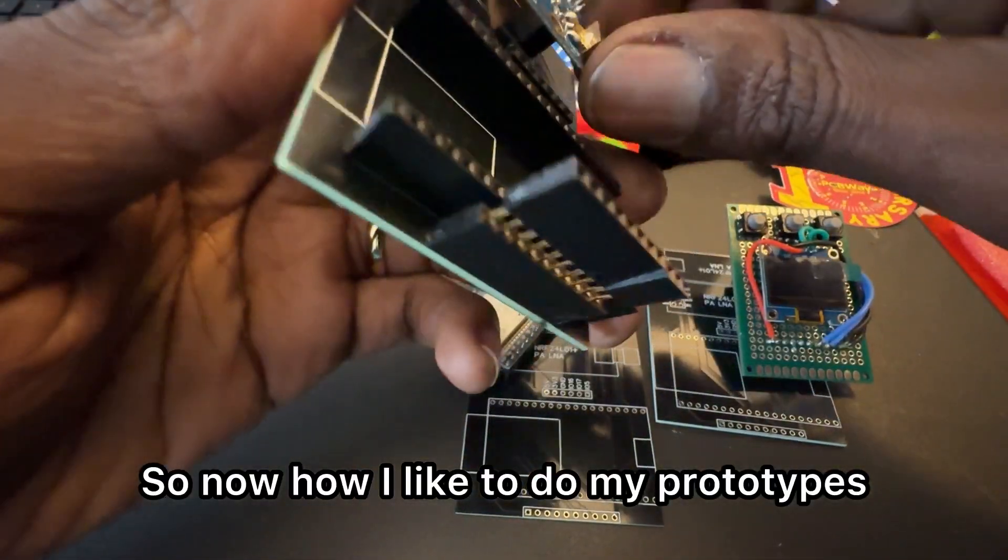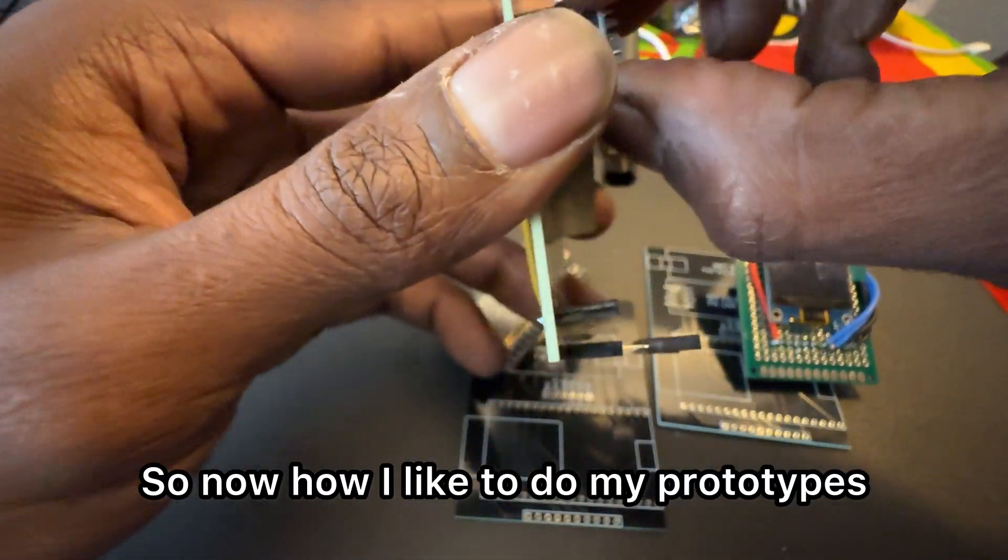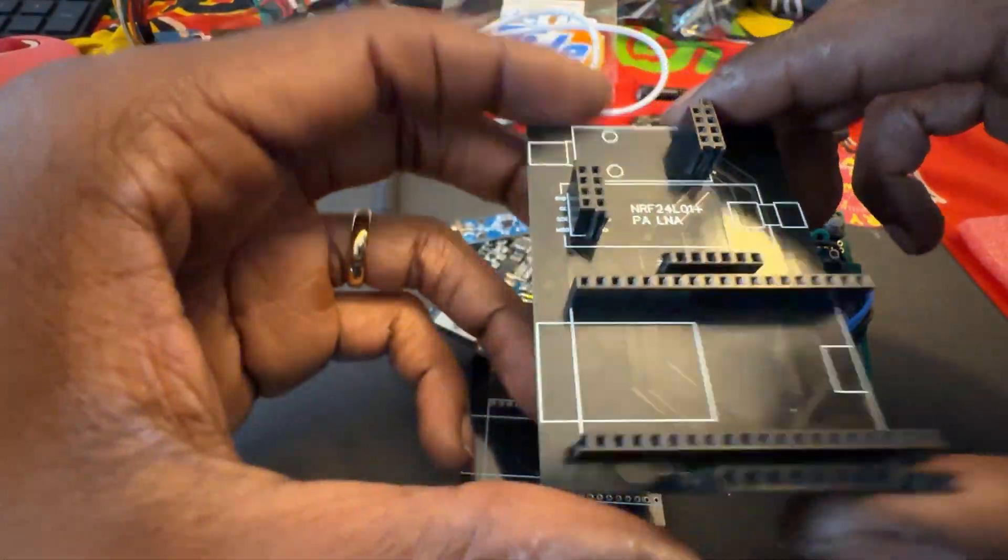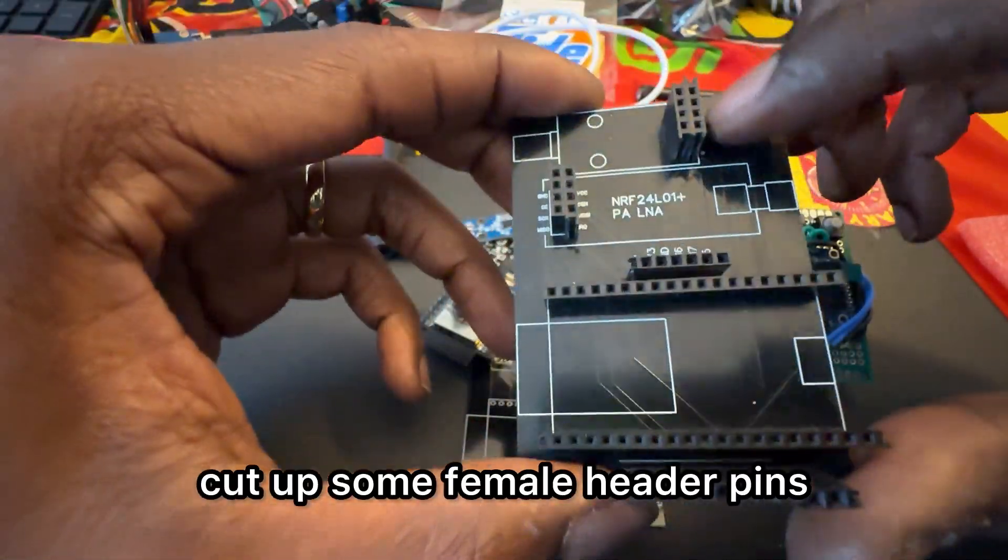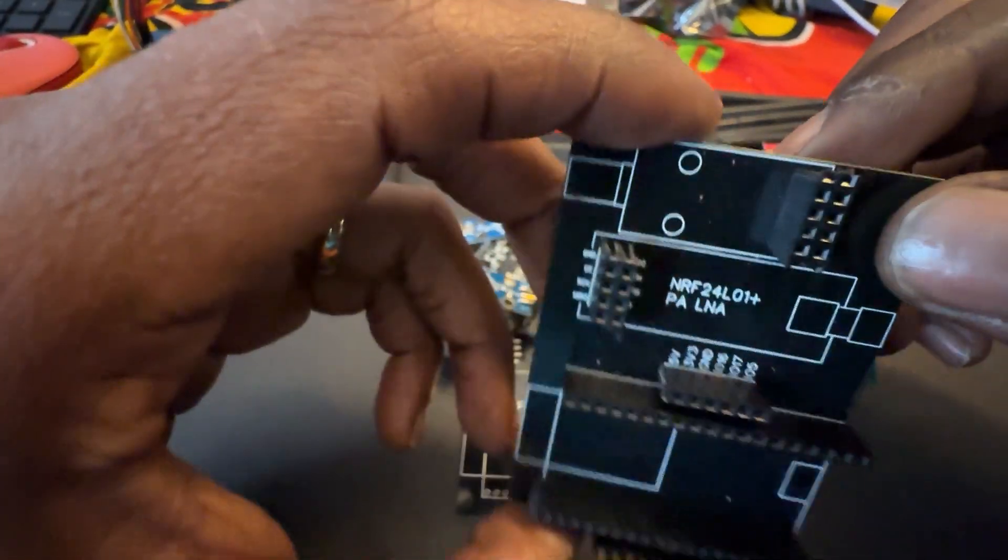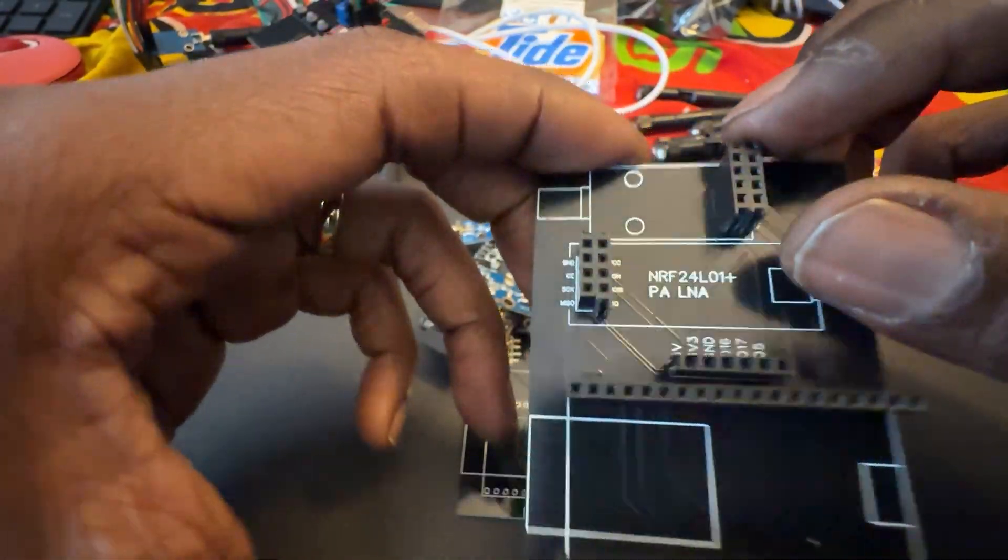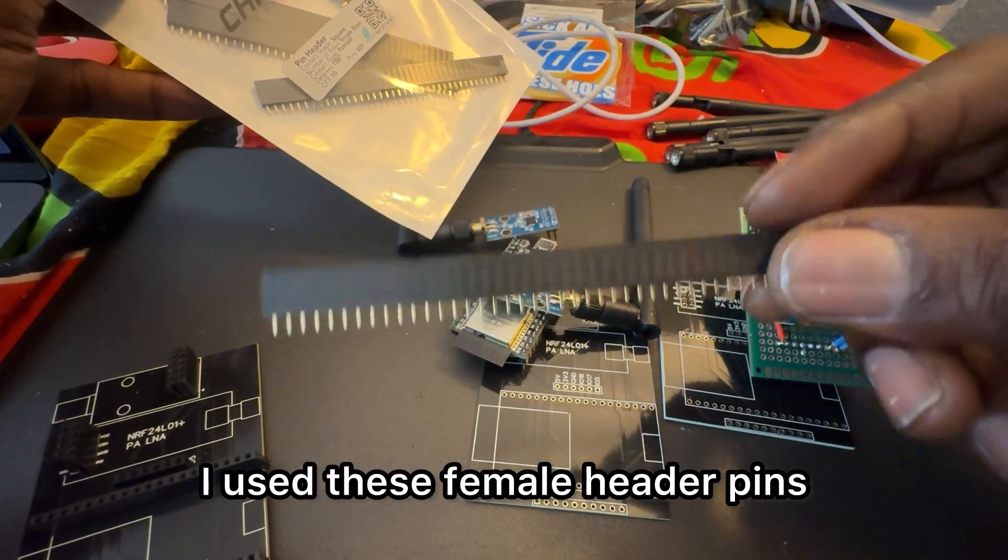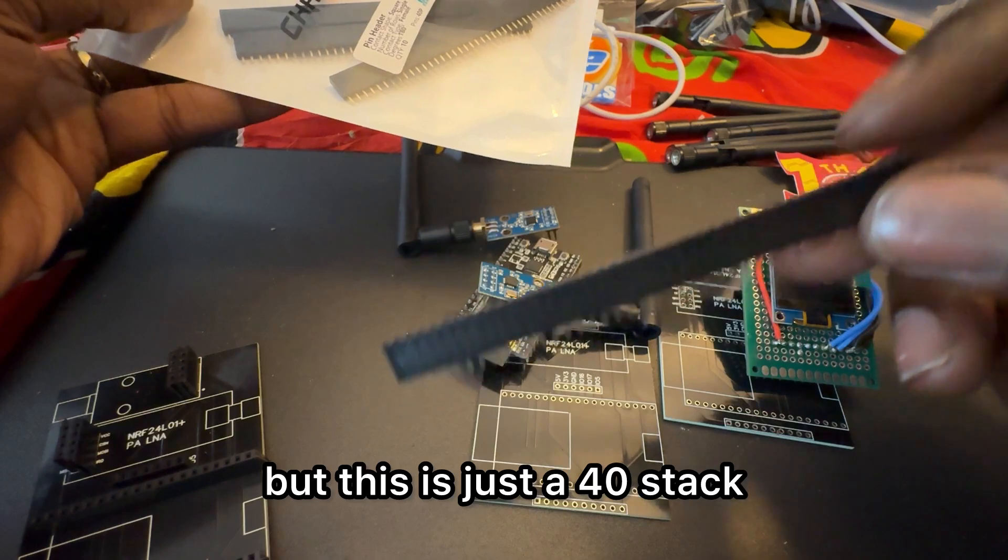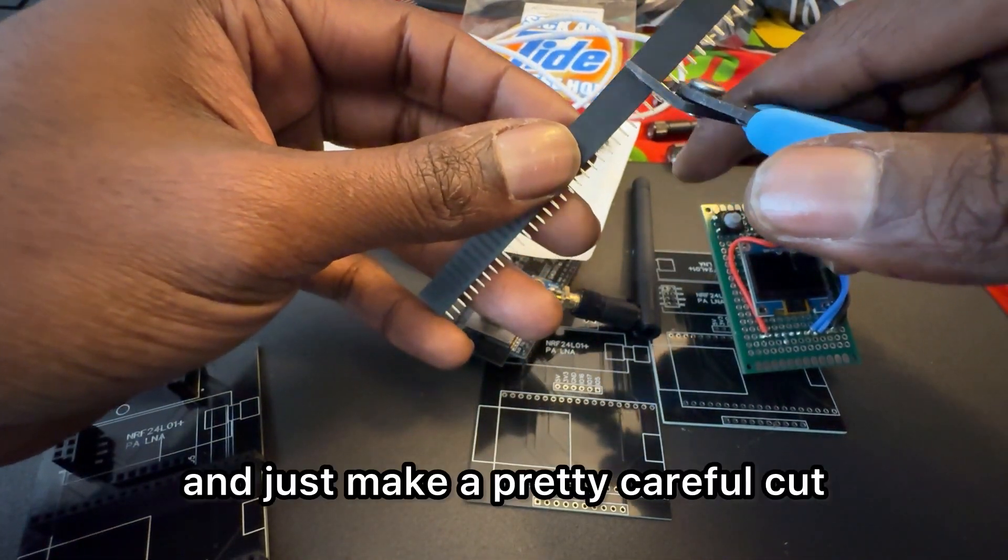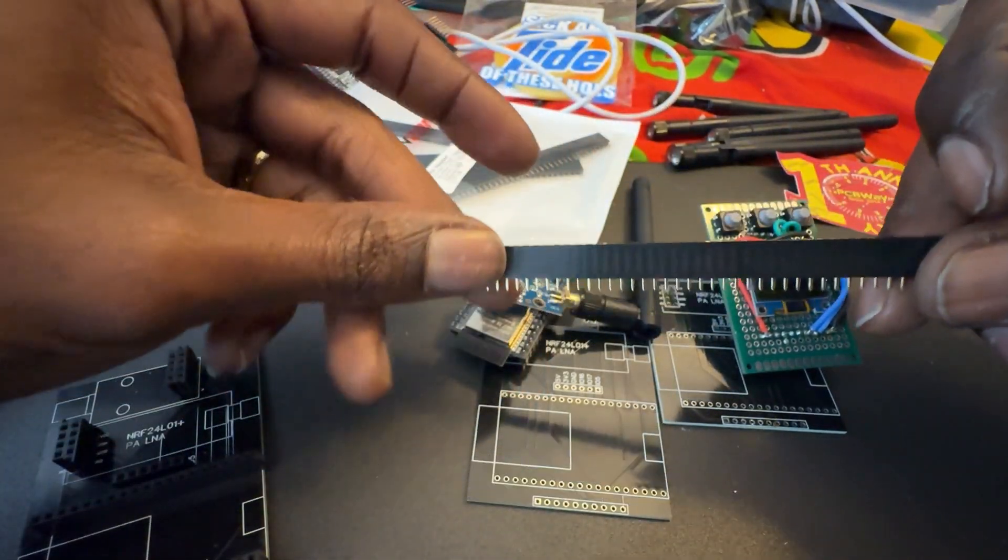So now, how I like to do my prototypes: I cut up some female header pins. Obviously this isn't the cleanest but do it however you need to. I used these female header pins, this is just a 40 stack, and then I just use some cutters and just make a pretty careful cut.